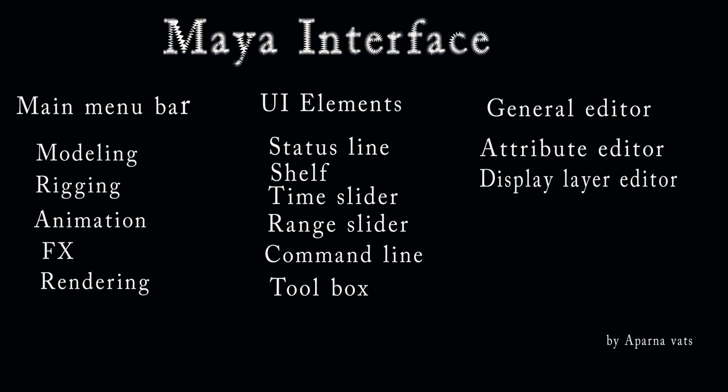The main menu bar can be toggled with the shortcut Ctrl+M. Some menus stay the same: File, Edit, Create, Modify, Display, and Window. Other menus change according to the menu set selected. Menu sets include: Modeling, Rigging, Animation, Effects, and Rendering. The default menu set shows the standard fixed menus followed by the set-specific menus.